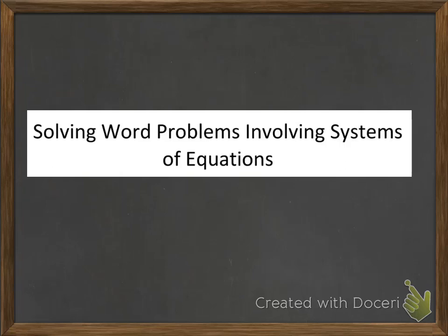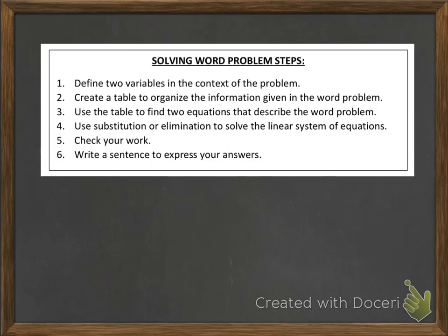Welcome to this video on solving word problems involving systems of equations. Let's look at the steps. First, we need to define two variables in the context of the problem. Then we will create a table to organize the information given to us and use that table to find two equations that describe the word problem. Then we can use either substitution or elimination to solve our system of linear equations and check our work. Lastly, we will write a complete sentence to express our answers in the context of the problem.